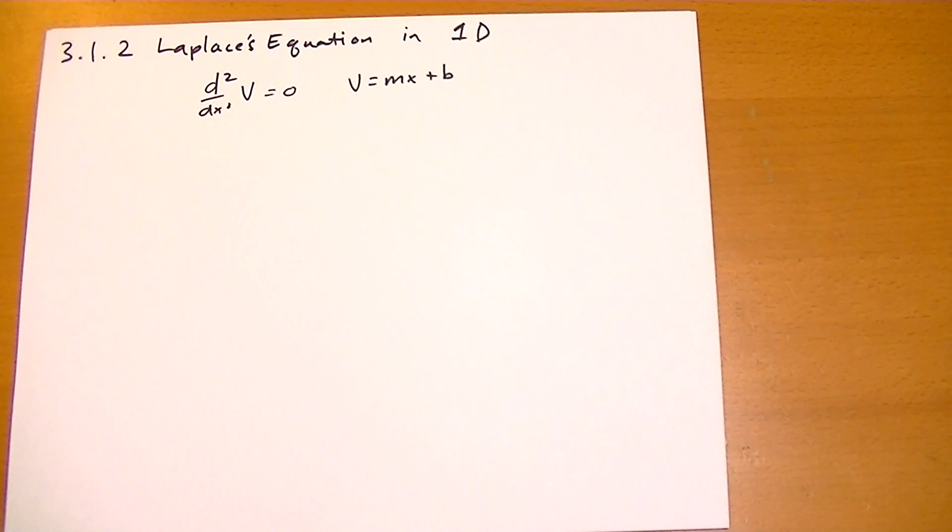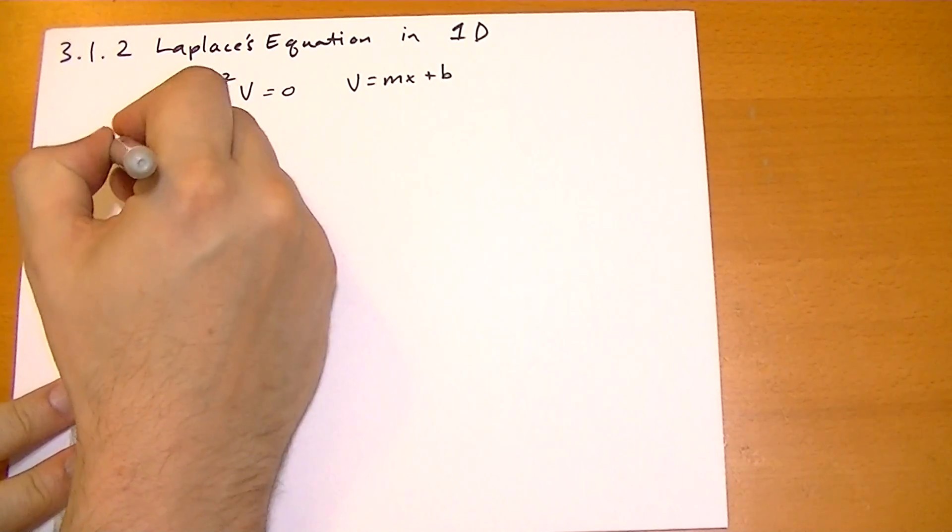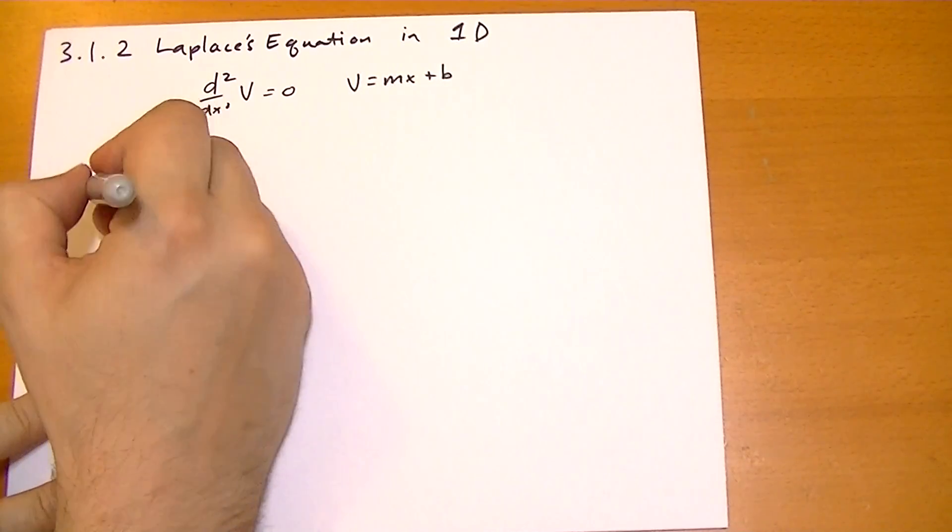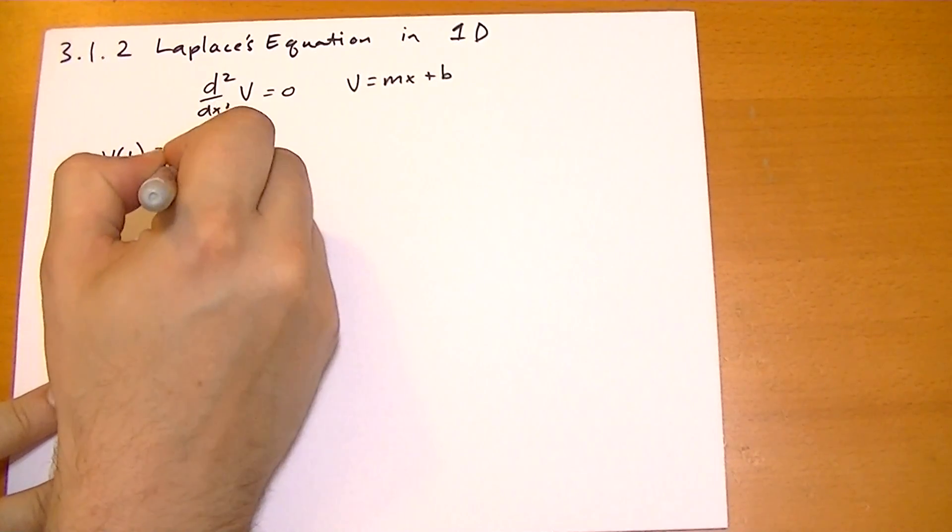So we have two constants we need to find, m and b. And in order to get two constants for a simple algebraic expression, we need two boundary conditions. So suppose we know that v of 1 is equal to 4. I'm using the book's example, by the way. And v of 5 is equal to 0.